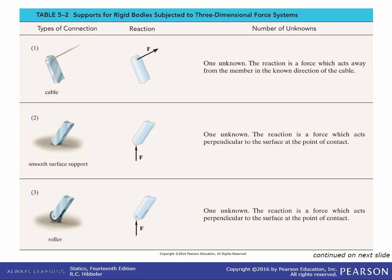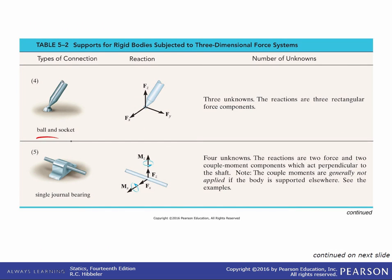A cable's force is directed along the cable. A smooth surface support prevents translation in one direction so the force is in that vertical direction. A roller is similar to the smooth surface support. A ball and socket, like your arm, can't support any moments but can prevent translation in any direction giving three forces. A journal bearing has four unknowns: reaction forces in the X and Z directions since it can't move in those two directions, and it can also support moments about the vertical and X axes. Those moment unknowns are typically the ones removed when you have more than six unknowns.